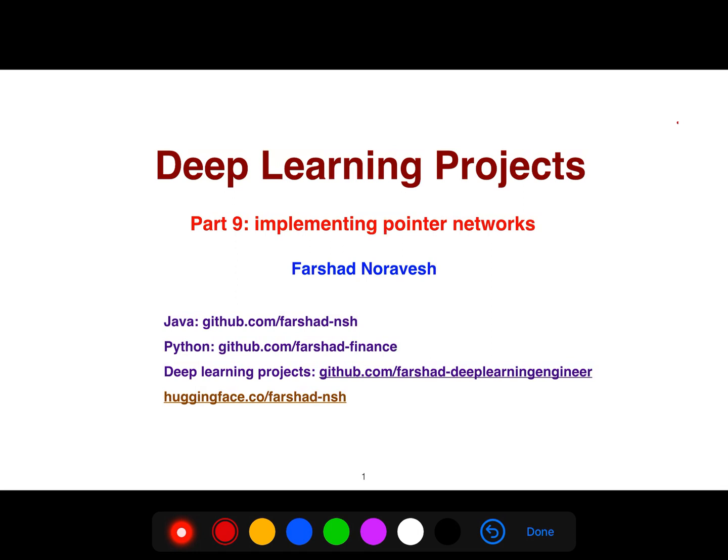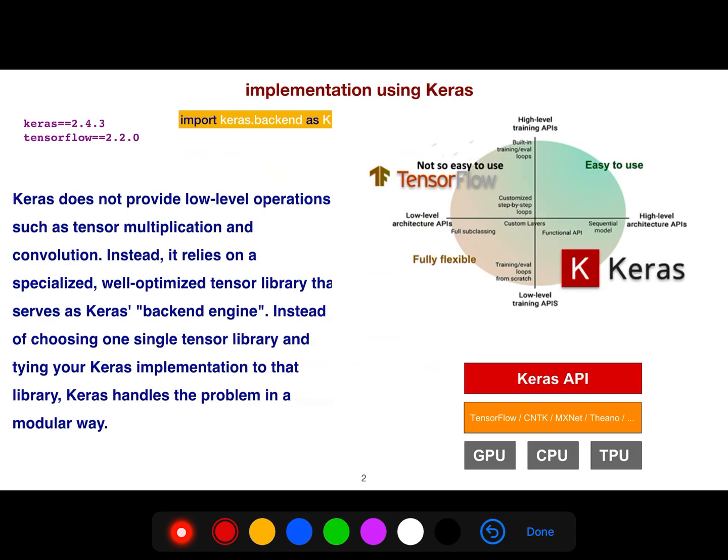Let me introduce you to pointer networks, which I'll explain the applications of in bottom-up constituency parsing and many other problems. They can be implemented in Keras because some beginners are comfortable working with Keras, but I myself prefer to work with PyTorch even for small projects.